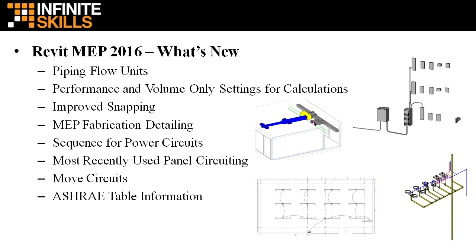Some of the functionalities carried over from Revit 2015 R2 include a sequence for power circuits. You can create a sequence for power circuits when they're created in the Electrical Settings dialog. You also have the most recently used panel circuiting, where you can automatically connect the most recently used panel for current sessions. Move circuits was another element — you can move a circuit to the target slot without disrupting any other circuits.